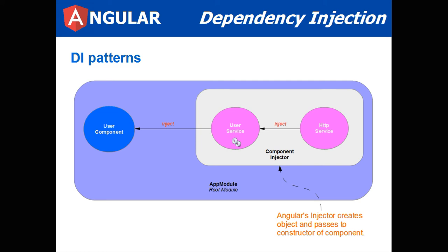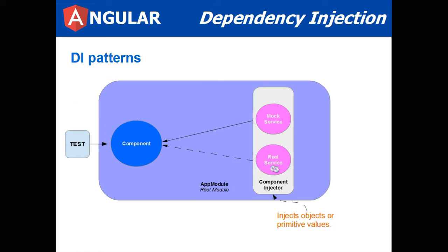Another pattern would be injecting the HTTP service into the user service, and the user service getting injected into the user component. This could also represent the factory where in test mode you're using a mock service and in production you're using a real service, with an injector that can inject one or the other.